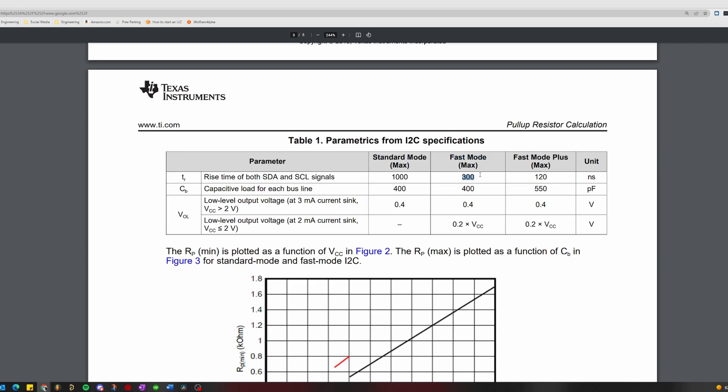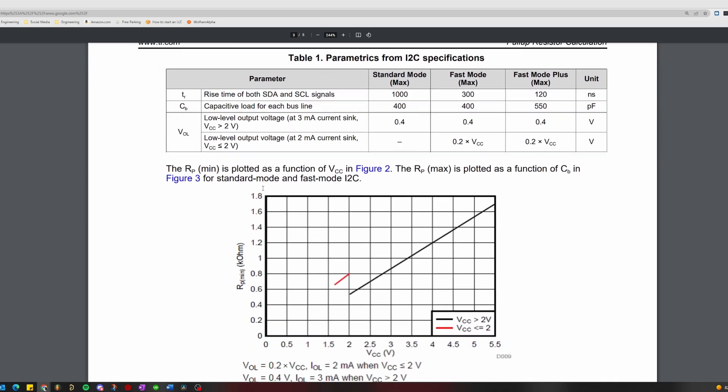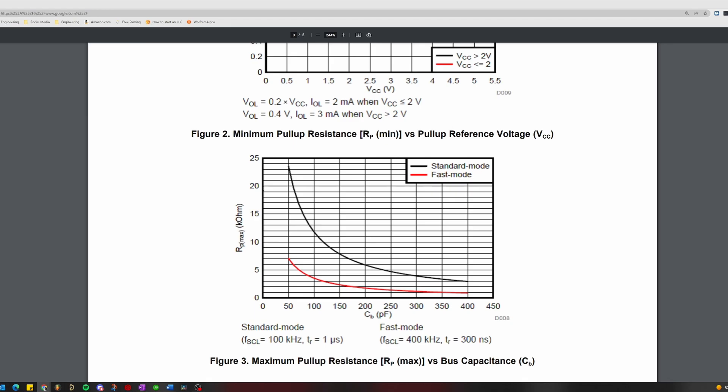For fast mode plus, a maximum rise time of 120 nanoseconds or 0.012 microseconds is allowed, and for high speed, a maximum rise time of 80 nanoseconds or 0.008 microseconds is allowed.